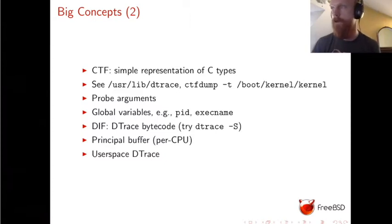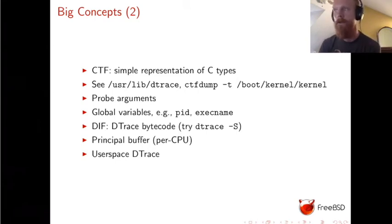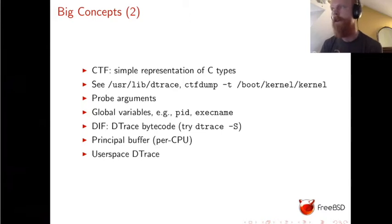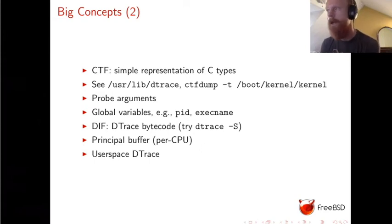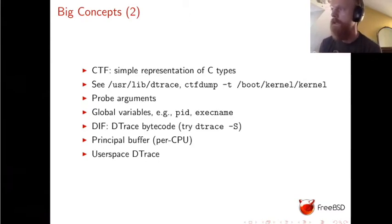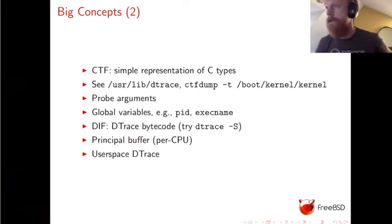DTrace has a number of global variables it always provides that give additional context in your probe. When a probe fires, it executes in the context of a specific thread, that thread belongs to a process with a PID, and if it corresponds to a user process, it has an executable name. There's a whole set of global variables you can reference. There's a very good and comprehensive guide to the whole D language on dtrace.org, maintained by the Illumos developers — Illumos being the open-source descendant of Solaris — which has a strong culture of using DTrace. I strongly encourage you to look there for all the different global variables and types.